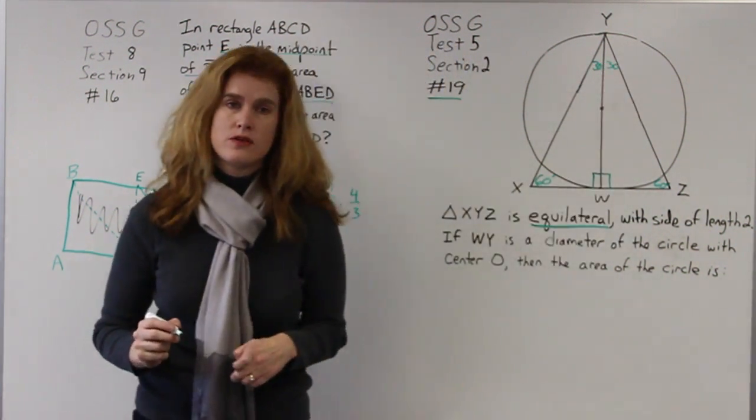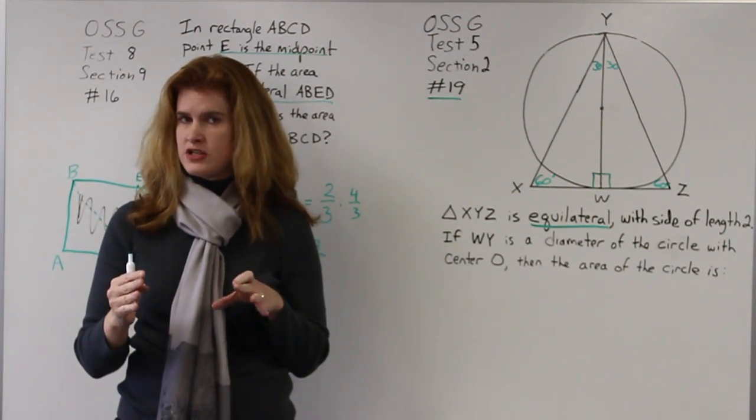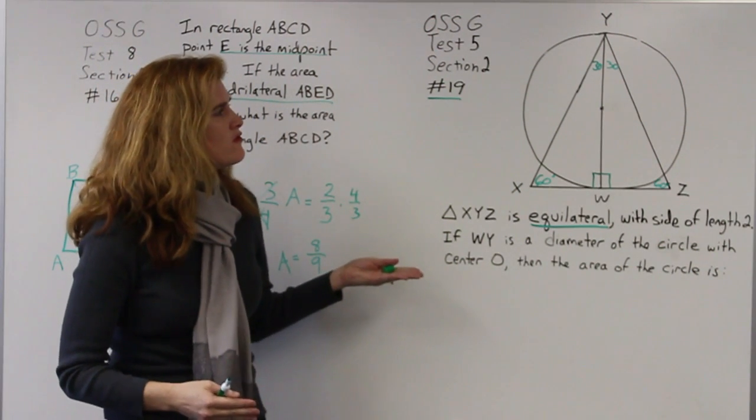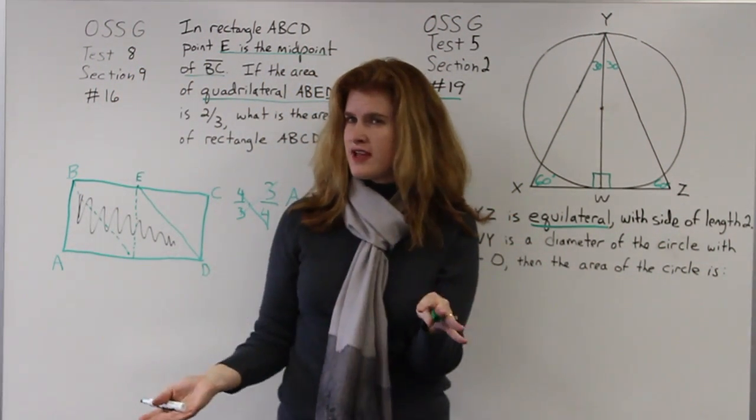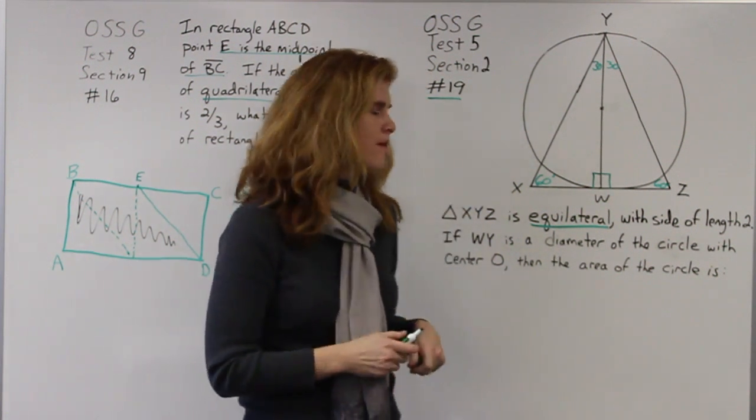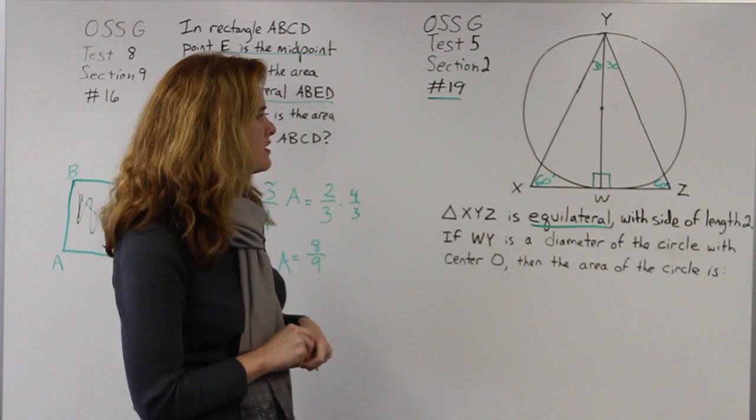You should really know those ratios, 30-60-90 ratios, really well. They do give you a little guide at the front of the test that you can flip back to to remind yourself if you forget it, but it's really good to know that pretty well. So now I know I'm dealing with two 30-60-90 triangles.